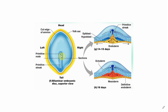Now, what happens in the primitive streak — as I told you — there is the migration of cells from the tail end towards a point which is called the primitive node. So the cells are migrating towards this point called the primitive node, or Hensen's node. This makes a depression or a kind of groove in the epiblast layer.